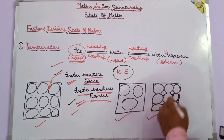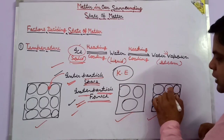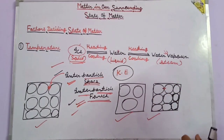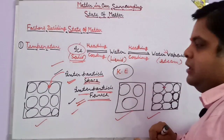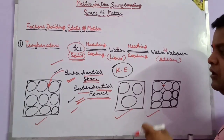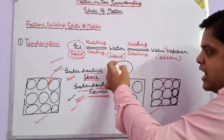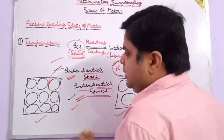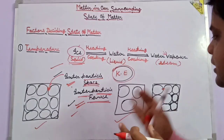In the case of solids, the inter-particle force of attraction is very high and the inter-particle space is very less. In the condition of liquid, the inter-particle forces are slightly less compared to solid, and the inter-particle space is slightly higher. In liquid, the inter-particle space is slightly more because inter-particle forces are slightly weaker than in solids.